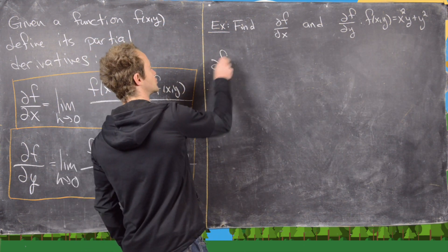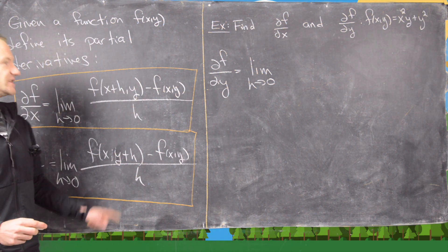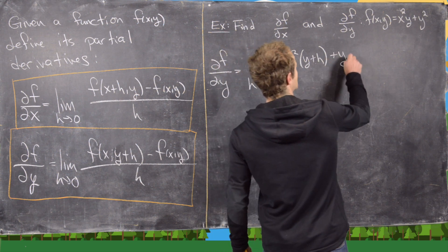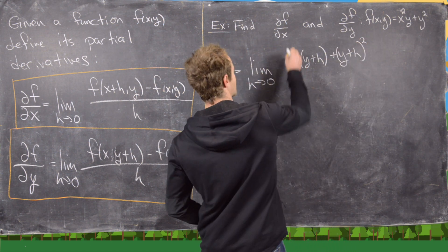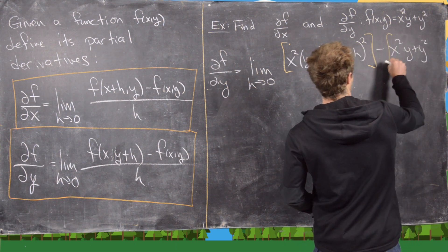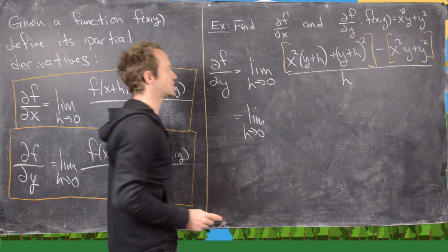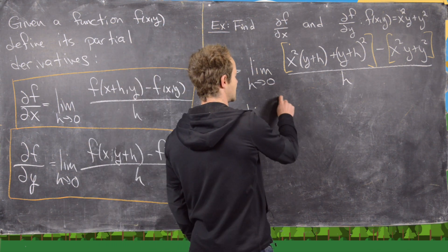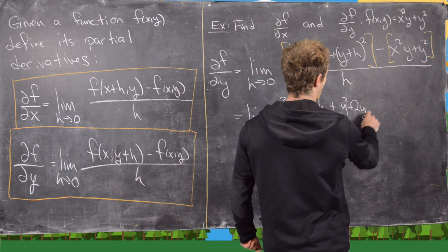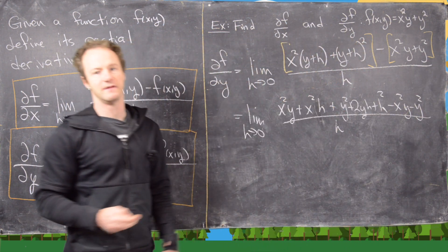Now let's find the partial derivative with respect to y. That's the limit as h goes to 0, and we need f(x, y+h), so we replace every y with y+h. That gives us x squared times (y+h) plus (y+h) squared, minus x squared y plus y squared, all over h. Expanding and distributing the minus sign gives us: x squared y plus x squared h plus y squared plus 2yh plus h squared minus x squared y minus y squared.